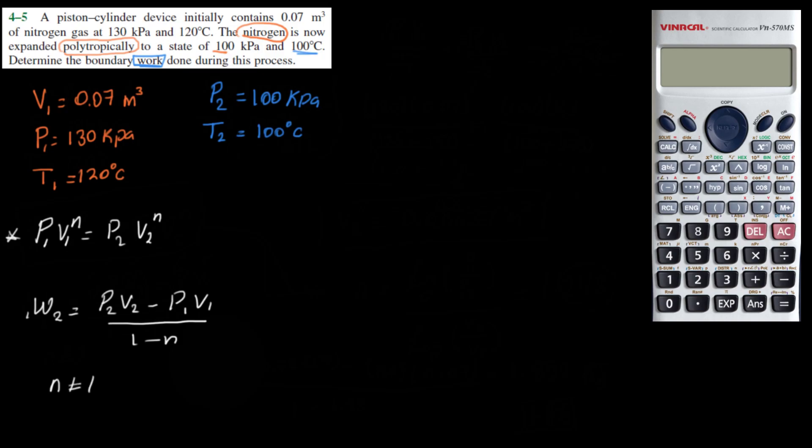I'm going to see what we have and what we don't have. We have P2. We don't have V2 here, but we have P1 and we have V1. Let's try finding V2.